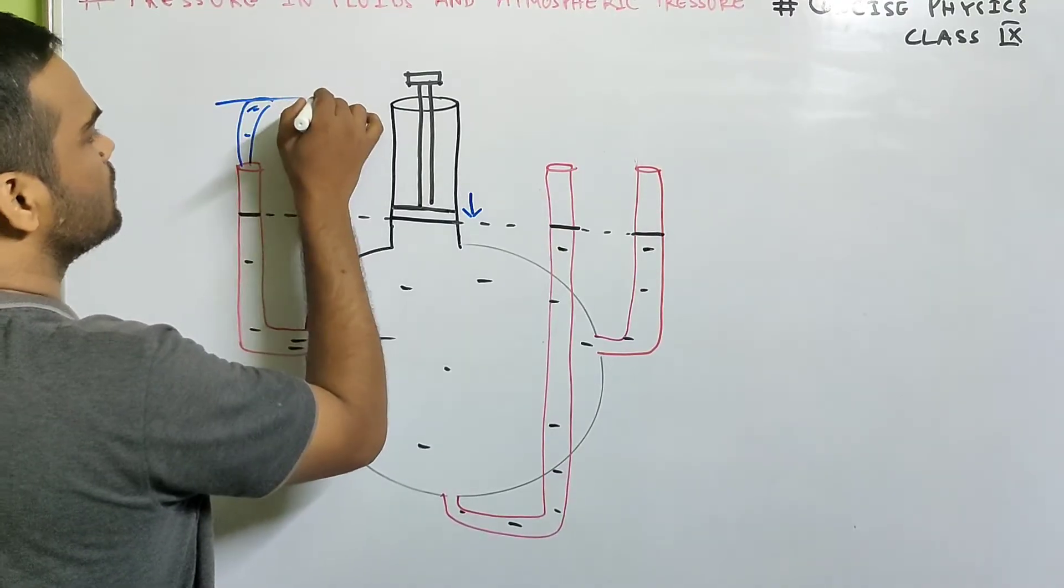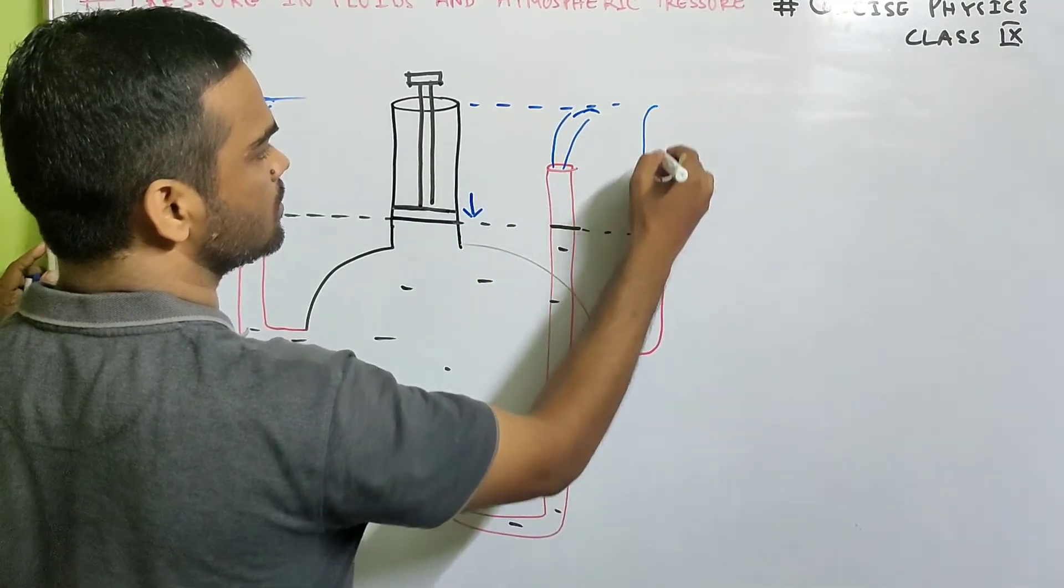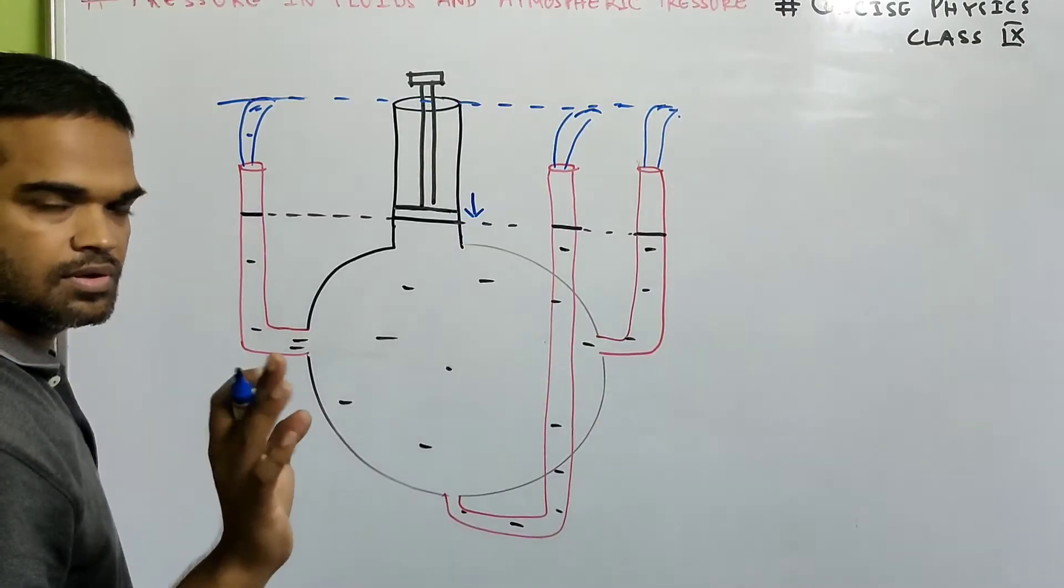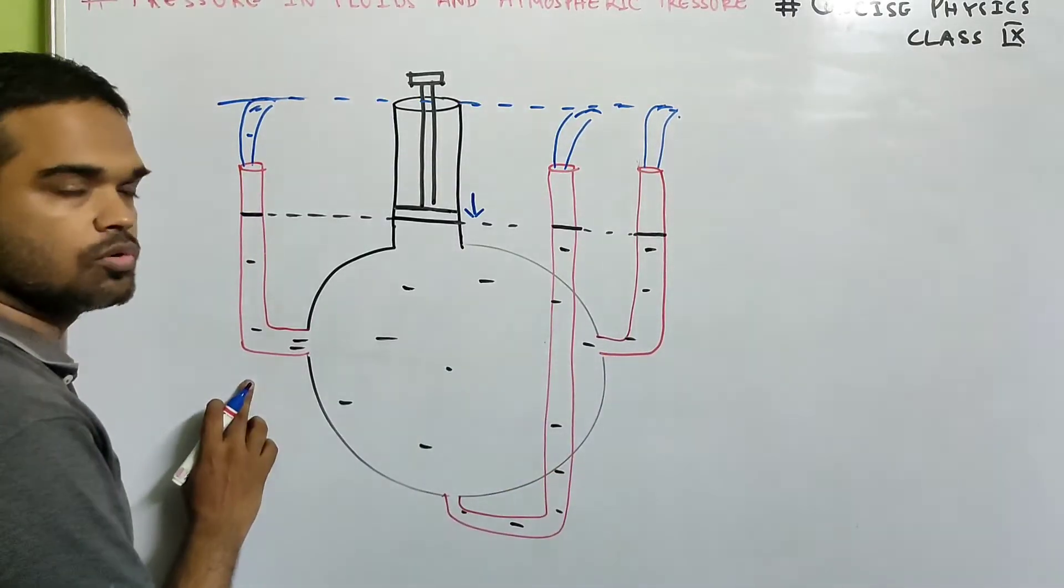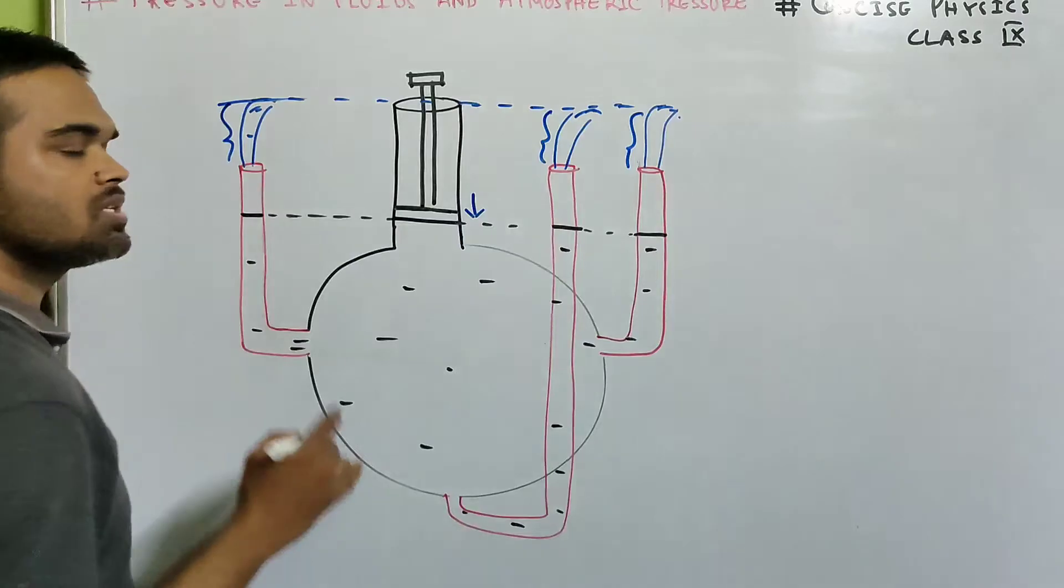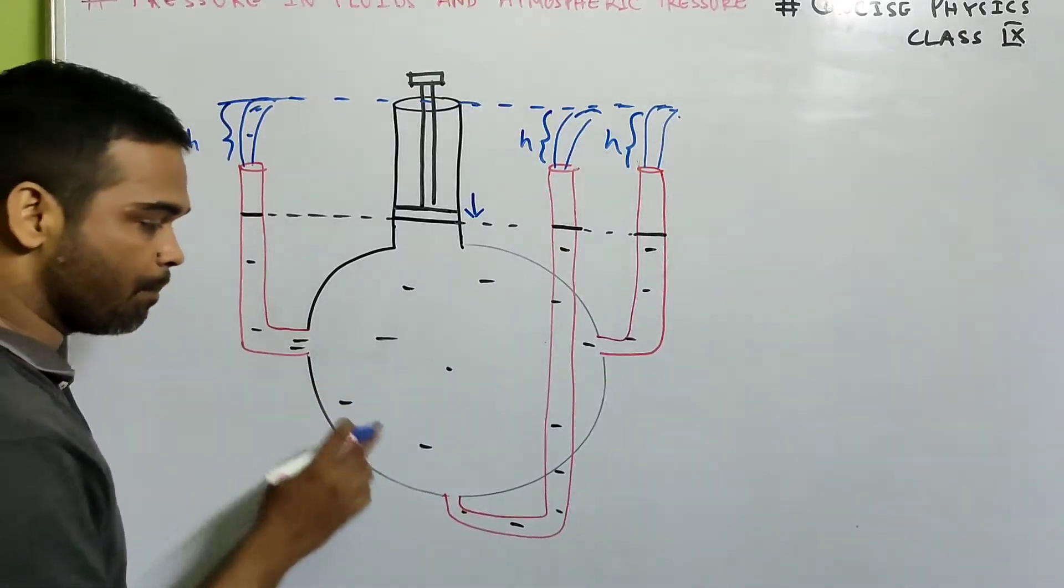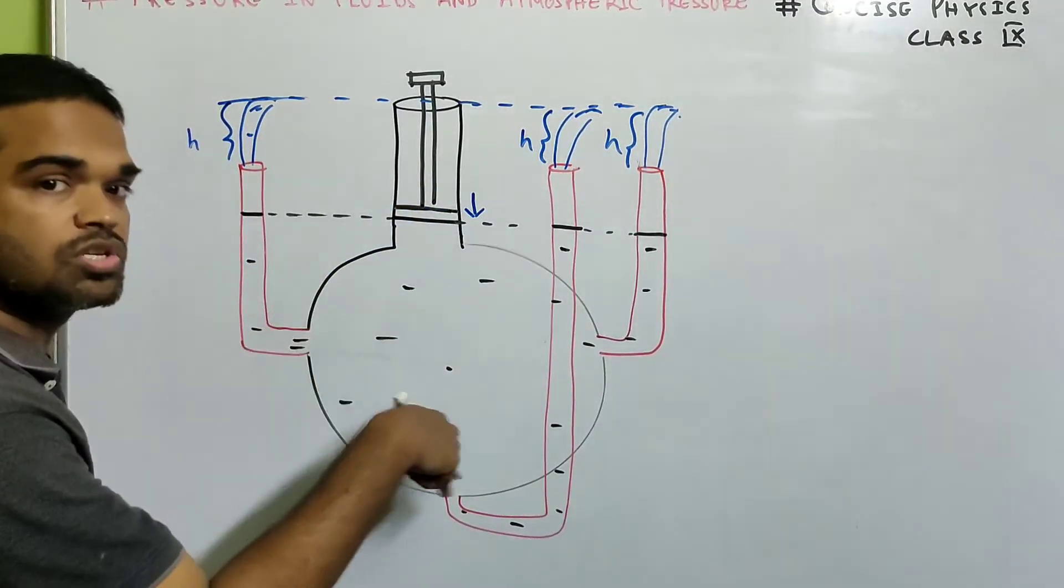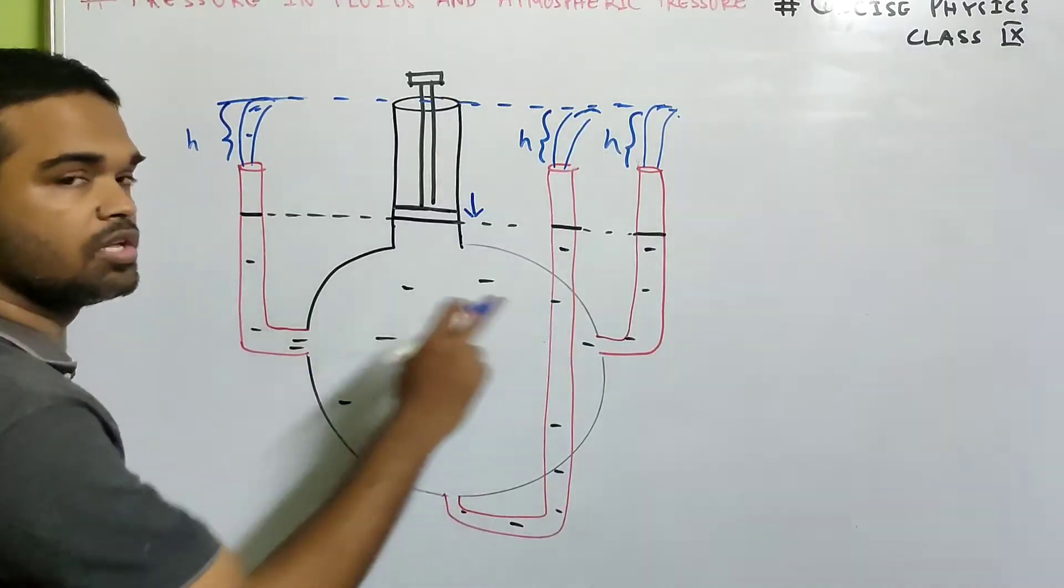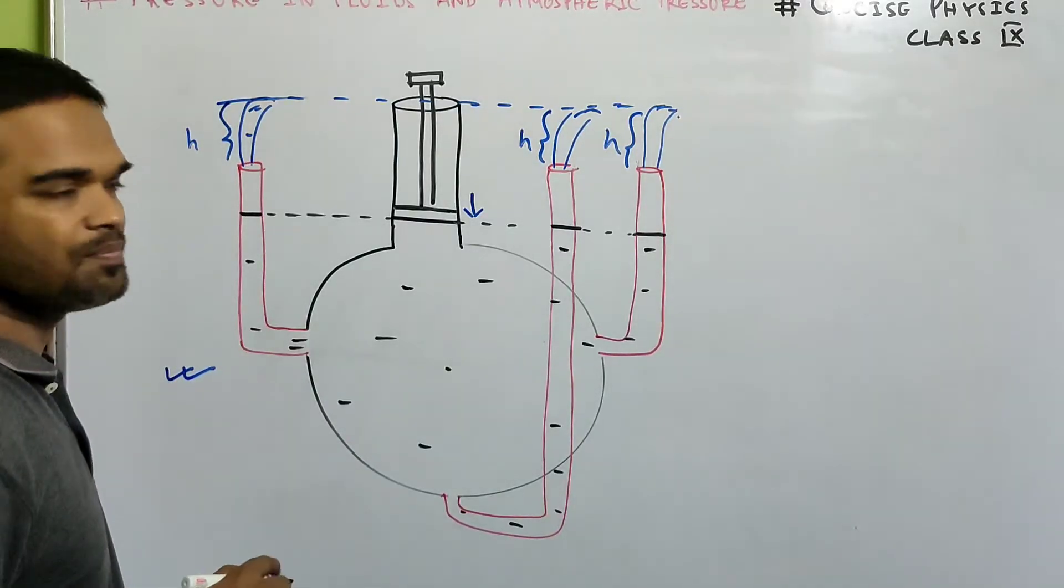then the level of water, the height of water reached in all the three cases will be same. Whether it's this tube, this tube or this tube, the water jet which is coming out rises to the same height. Rises to the same height. Suppose this is H, this is H, this is H. The height is same which means pressure. When pressure is exerted in an enclosed liquid, the pressure is transmitted equally and undiminished in all directions throughout the liquid. Am I clear?